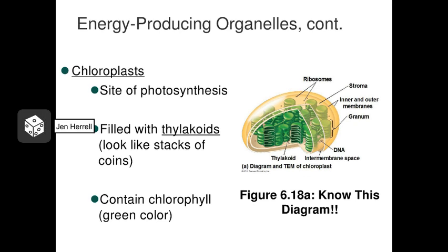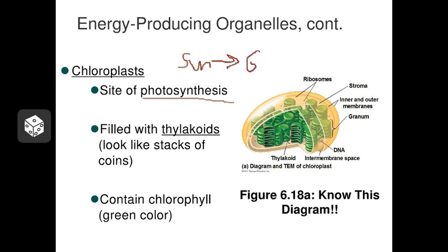The second major energy-harvesting organelle found inside cells is known as the chloroplast. Animal cells don't have chloroplasts, but plant cells do — plant cells have both mitochondria and chloroplasts. Chloroplasts perform photosynthesis: the act of taking sunlight and capturing that energy inside glucose, so it captures it inside sugars. Chloroplasts are green in color because they contain these membranes called thylakoids, and on those thylakoids you can find the pigment chlorophyll. The chlorophyll helps the chloroplasts capture the sun's energy, and it's green in color — that's why chloroplasts are green. You probably remember seeing some chloroplasts under the microscope in the Elodea cells that you looked at in lab.